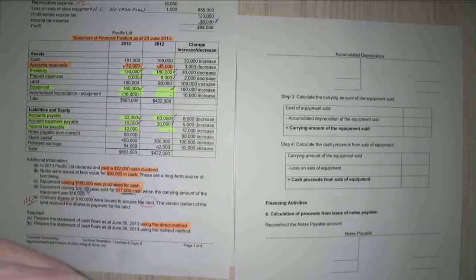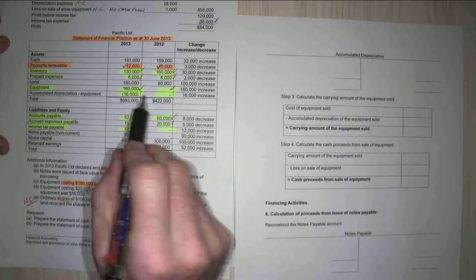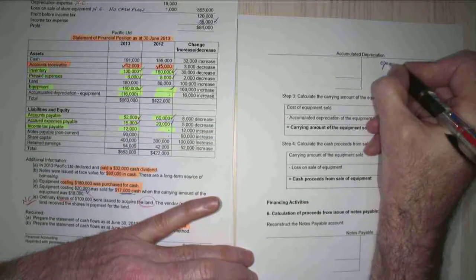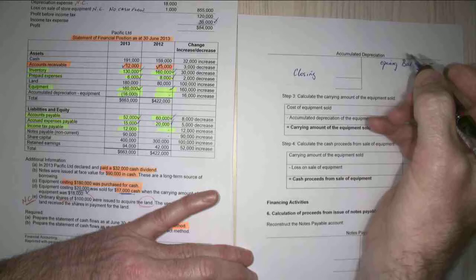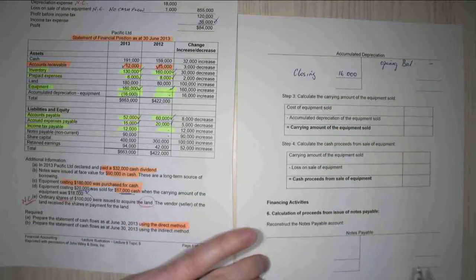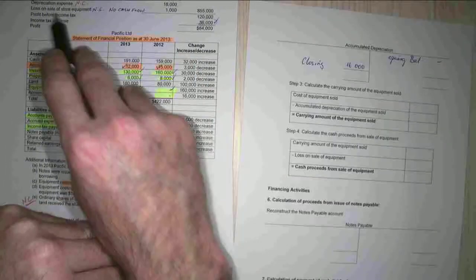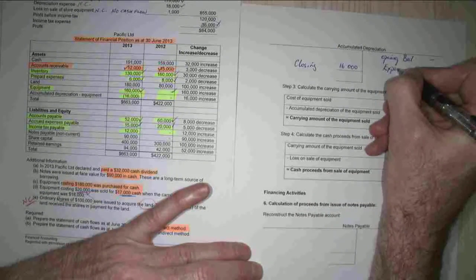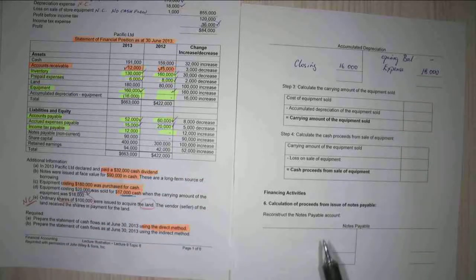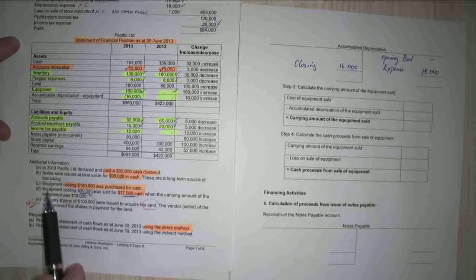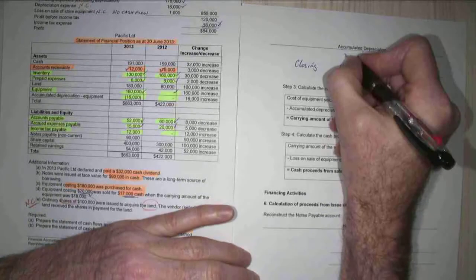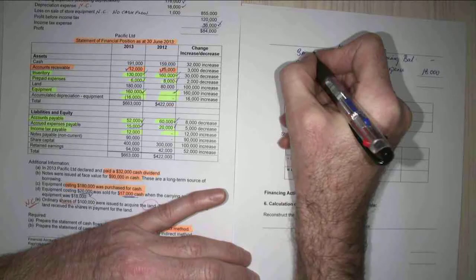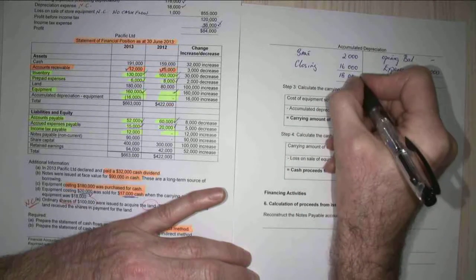My accumulated depreciation: opening balance was zero, closing balance was $16,000. Now, this is a negative asset, so my opening balance is a credit, and my closing was $16,000. It tells me up here that my depreciation expense was $18,000. And equipment costing $20,000 had a carrying amount of $18,000 when it was sold, so the difference between those two must have been $2,000 of accumulated depreciation. So I can prove my sale — which gives me 18 here and 18 here.